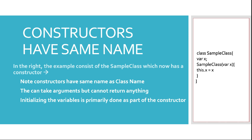Constructors are methods available inside the class with the same name as the class name. When you see a method with the same name as the class, you know these are constructors, and whenever an object is created, these constructors are going to be called by default — Dart does that for you automatically.